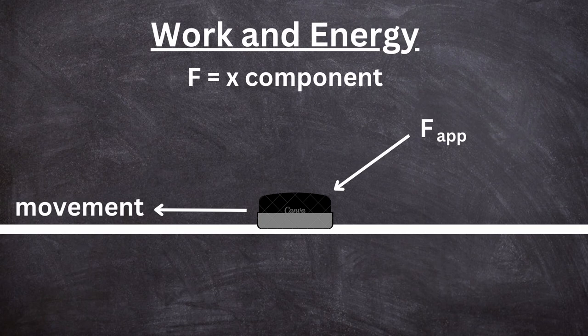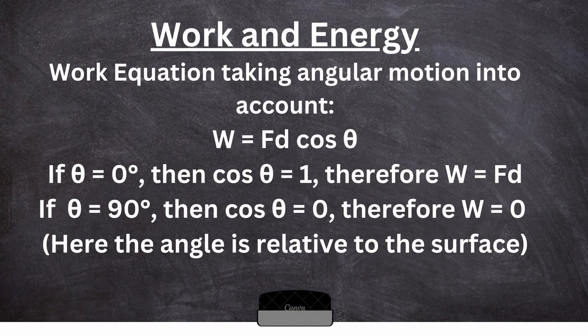Only the x-component is converted into work. To calculate this, we use the formula W = F × d × cosine θ. This makes sense because if you're already parallel to the displacement, your angle is zero and cosine of zero is one, so work equals F times d. But if you push straight down at 90 degrees, cosine of 90 is zero, so no work is done regardless of force or distance.